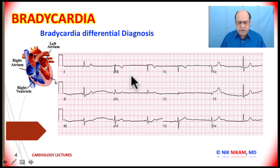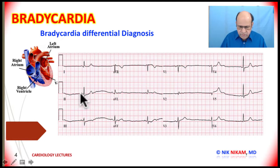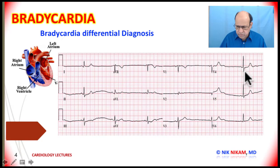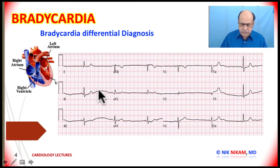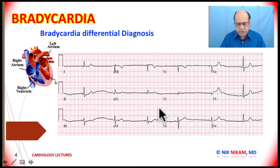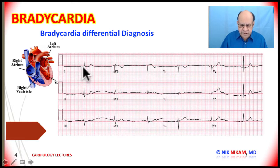We have bradycardia and we see definite P waves. The PR intervals seem to be constant, so we are dealing with sinus bradycardia. The QRS complexes are narrow and there is a 1-to-1 P to QRS relationship. That's how you come to a conclusion: first look at the atrial activity, then look at the PR interval and see if it is constant.